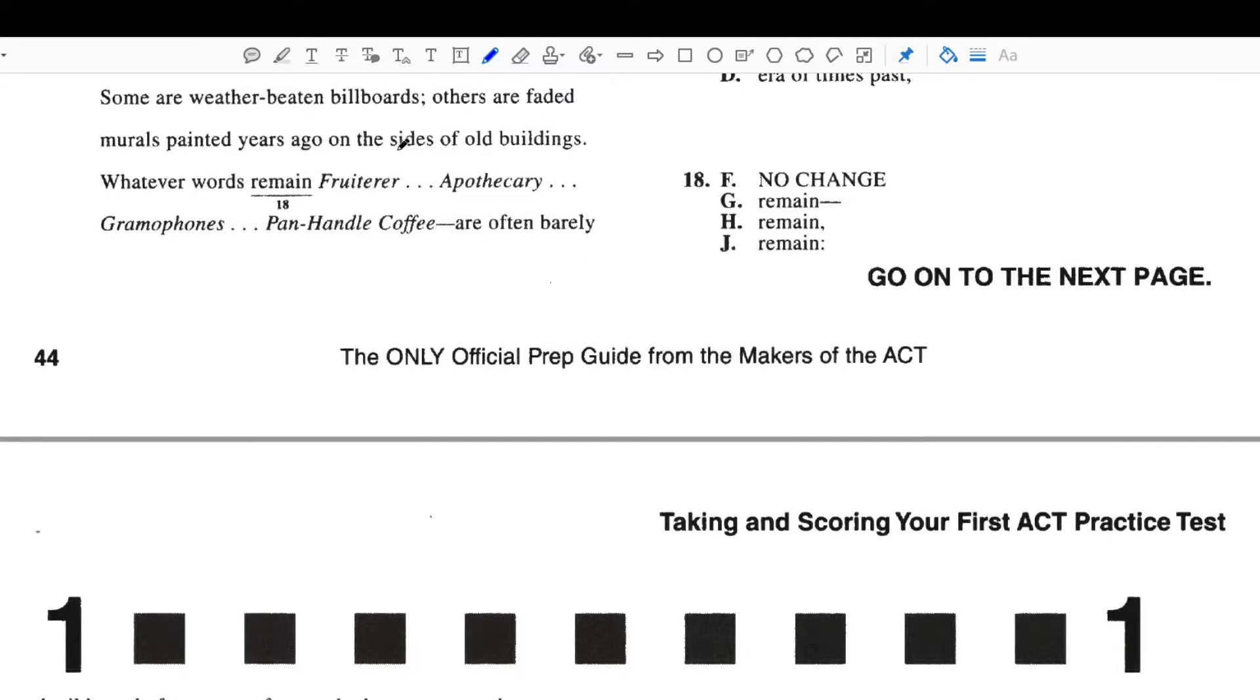Okay, so now what we need to do is figure out which one of these options is correct. Now the concision sub-vocalization technique really isn't going to help you in this case. Now if you're not sure, you can always start with the most concise answer, which is the one with the least amount of punctuation in this case, which is answer choice F, and see if this is correct or not. Now the only way to assess it is to know our punctuation rules. So we have part of a sentence up here, and then we have this dash, and then we continue on with the rest of the sentence.